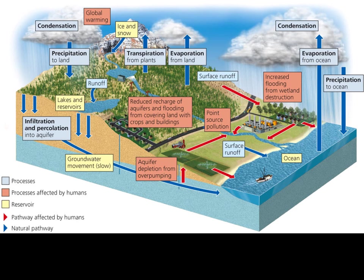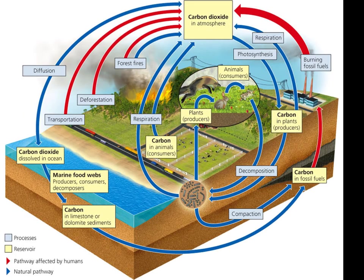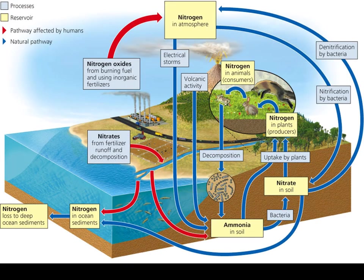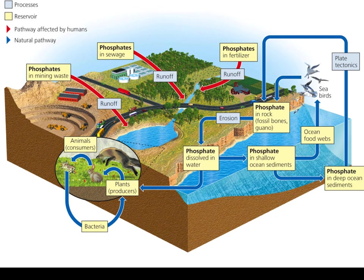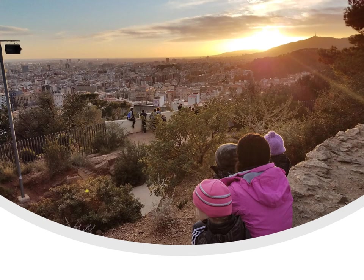We'll discuss each of these cycles in class, but this part is left for you to read in the book — you need to read the whole chapter and take notes. Here are depictions of the carbon cycle, the nitrogen cycle, and the phosphorus cycle. And that's it for now. Thanks for watching.